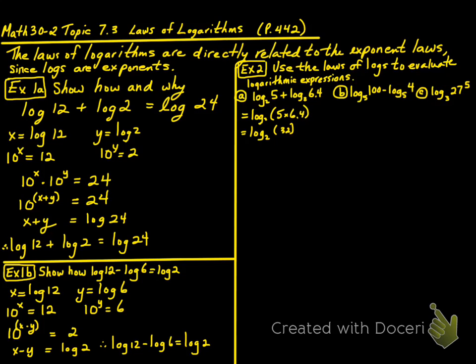2 to the power of what is 32? Well, 2^x = 2^5, so x equals 5.